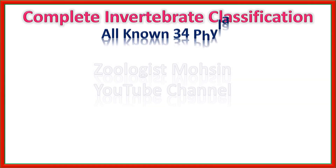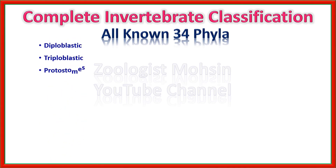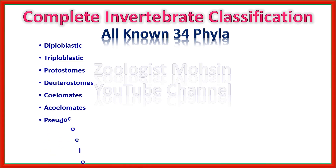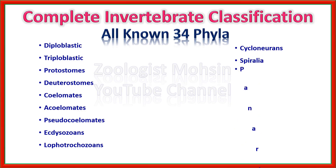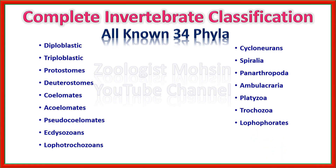Complete invertebrate classification. Being a biologist or zoologist, we must have a big picture of classification in mind by understanding terms like diploblastic, triploblastic, protostomes, deuterostomes, coelomates, acoelomates, pseudocoelomates, Ecdysozoa, Lophotrochozoa, Cycloneuralia, Spiralia, Panarthropoda, Ambulacraria, Platyzoa, Trochozoa, Lophophorates, and Chordata. We can make a big picture of animal classification which gives us a basic idea, and we can remember and reproduce classification during exams. Hope you will love it. Let's start.